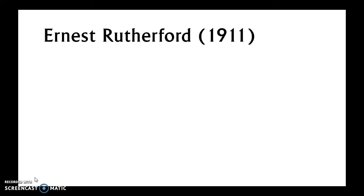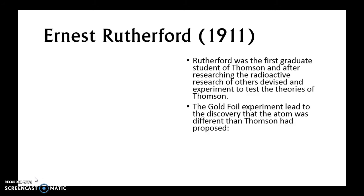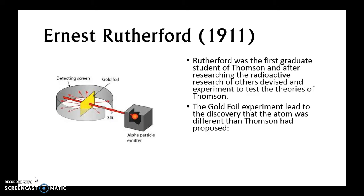Next, in 1911, was Ernest Rutherford. Rutherford was actually the first graduate student of JJ Thompson, so he was very familiar with Thompson's work. Rutherford was also deeply into the radioactive research that the Curies, Becquerel, and others had been working on. He used both Thompson's research and this radioactive research to devise an experiment to test Thompson's theory, under the assumption that Thompson was completely correct.